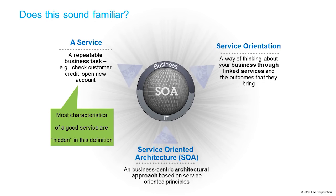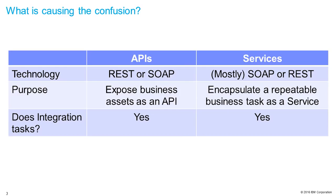My previous role at IBM was on the service-oriented architecture team, and I use this chart a lot. We talked about a service as being a repeatable business task — something like check customer credit or open a new account. And so that sounds a lot like what I just said an API was, which is an obvious reason why there might be some confusion.